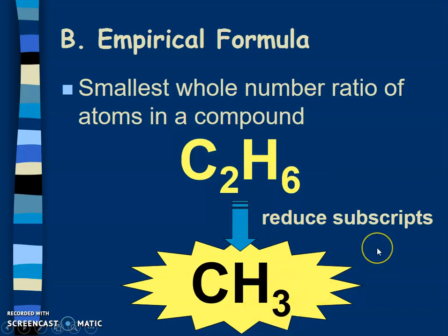So 2 divided by 2 is 1, 6 divided by 2 is 3. You can equate this to finding the lowest common denominator in math class. So if this was C3H9, you could still reduce it down in the same way. That's your empirical formula - the smallest whole number ratio of atoms in a compound.